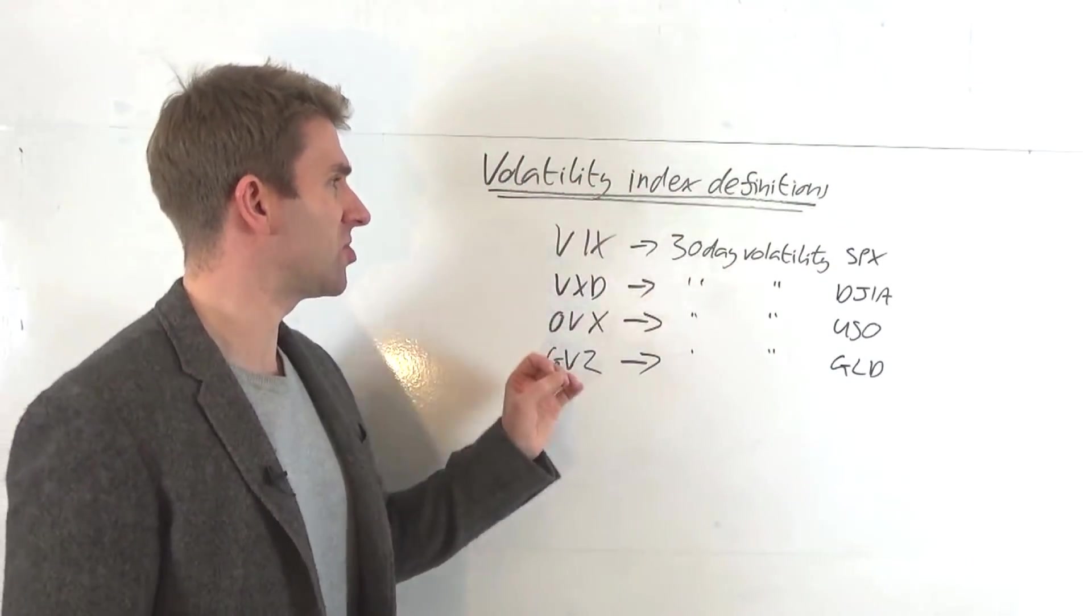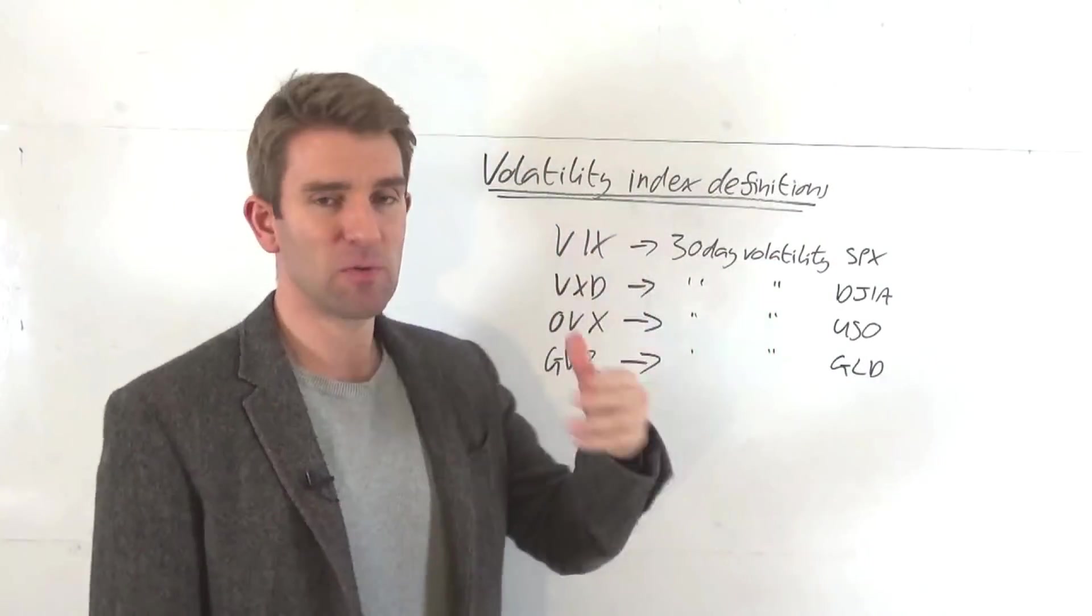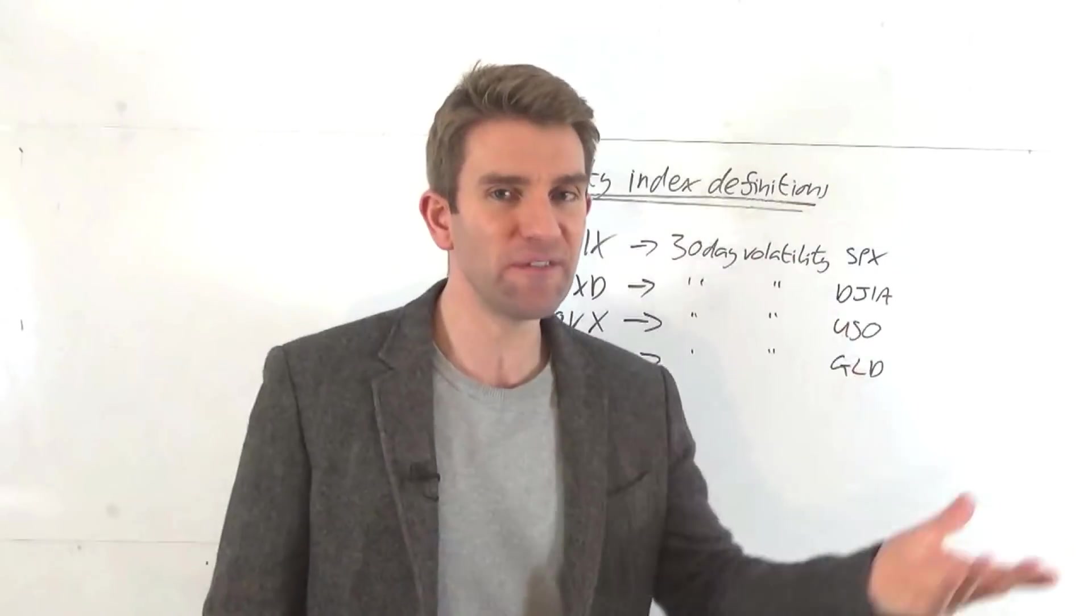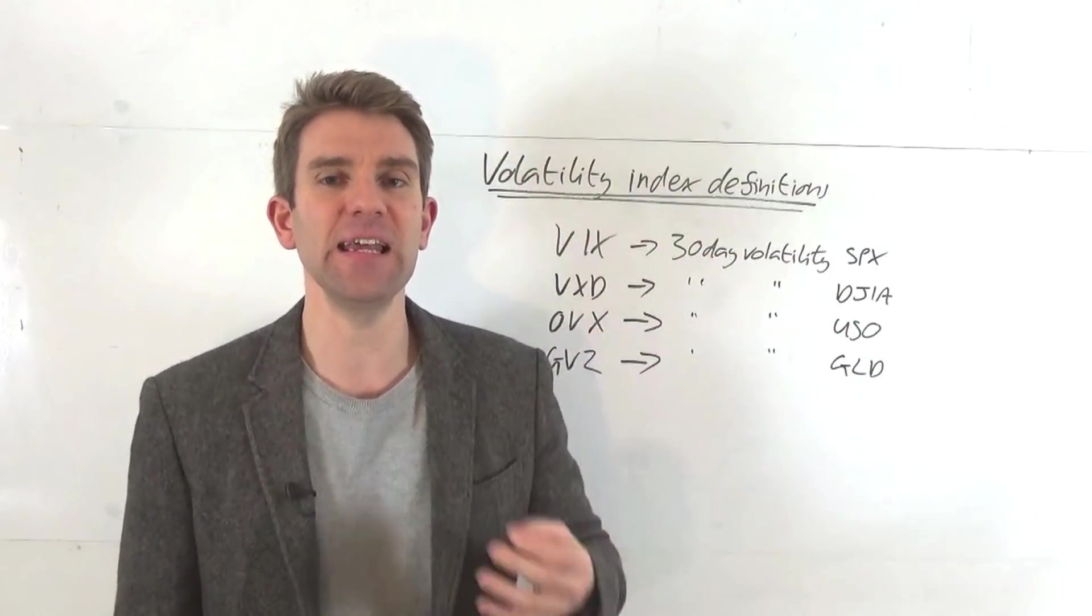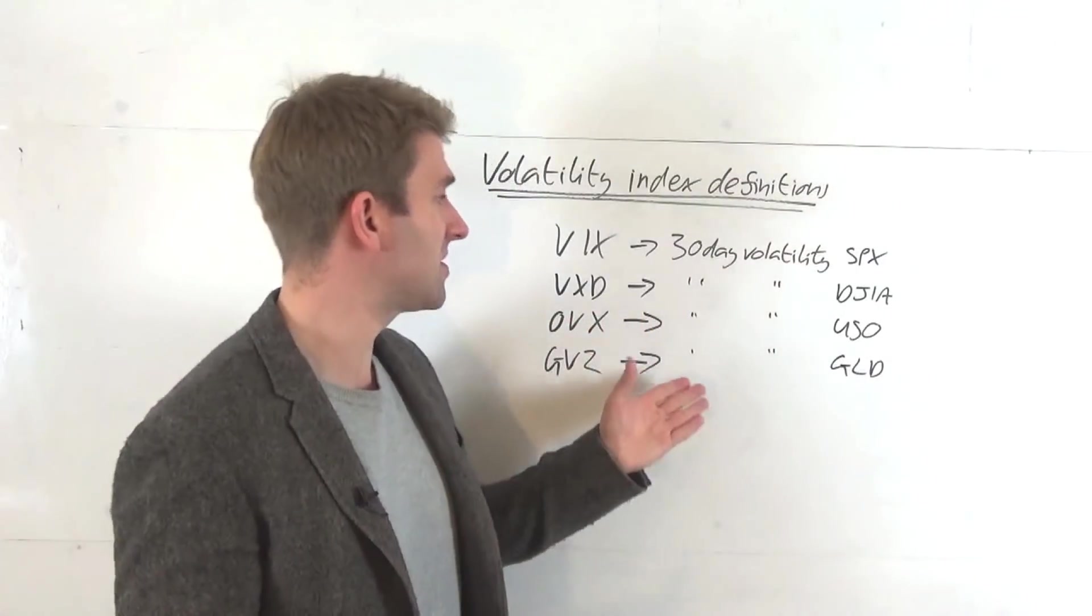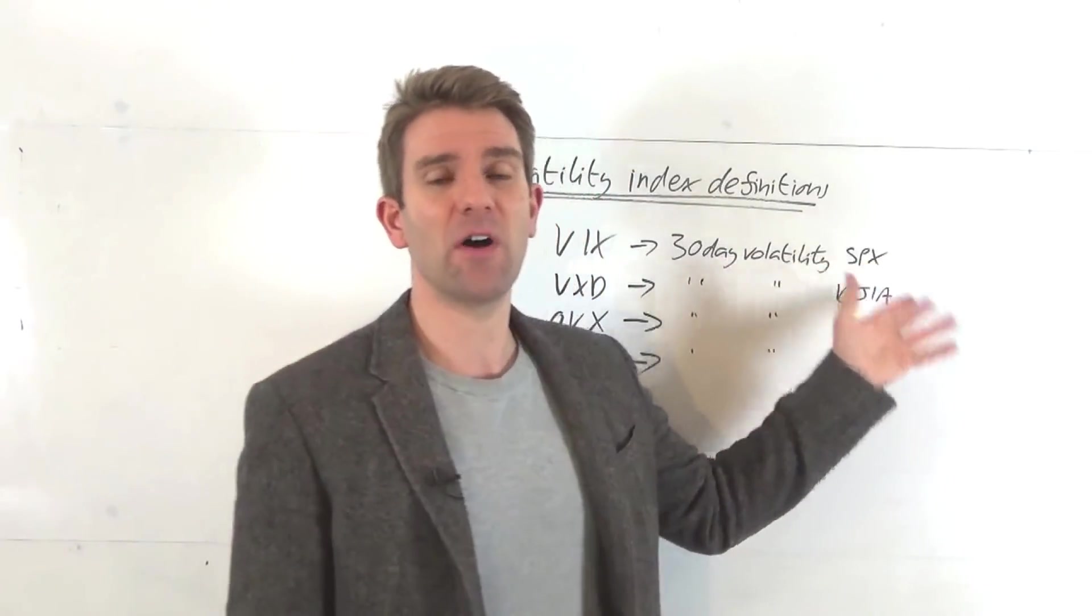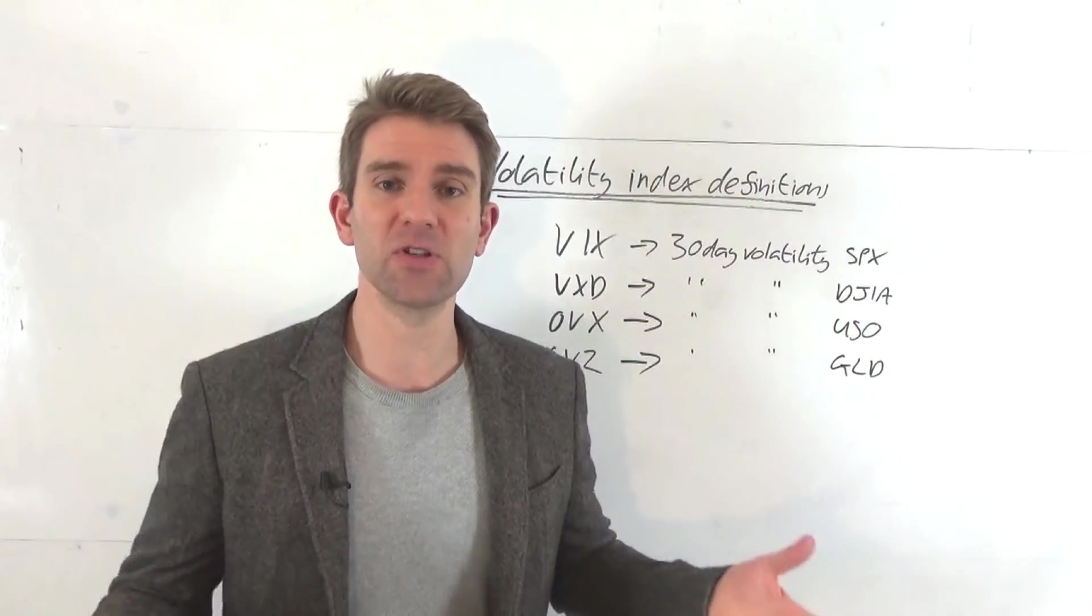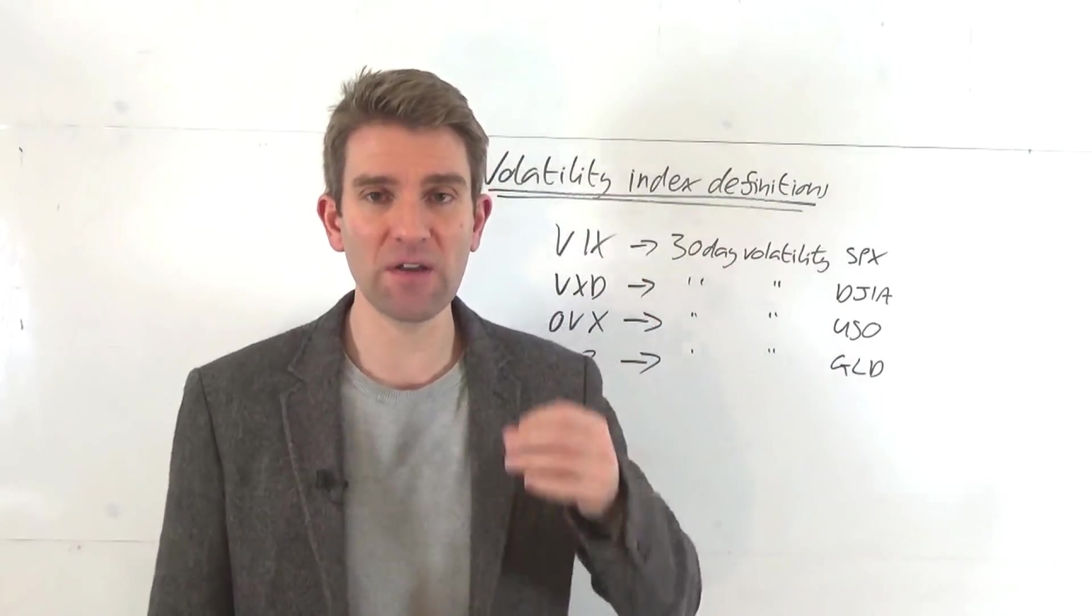Volatility index definitions. The one that we probably all know about is the VIX. You might have heard about it. It's sometimes called the fear gauge. It's kind of the way that people are feeling about the market. Now, that's my kind of rough overview. If we look at the official definition, it's this. It's the 30-day volatility of the S&P 500. What exactly does that mean? It's derived from the option price of the S&P 500.